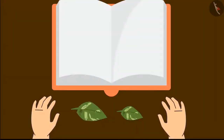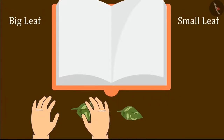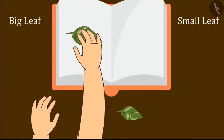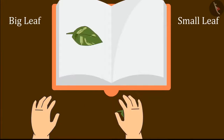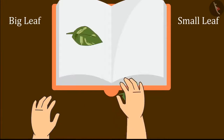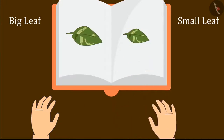First, I will paste the leaves. Here are the two leaves — we will put the big leaf here and the small leaf here. Chotu pasted both the leaves.